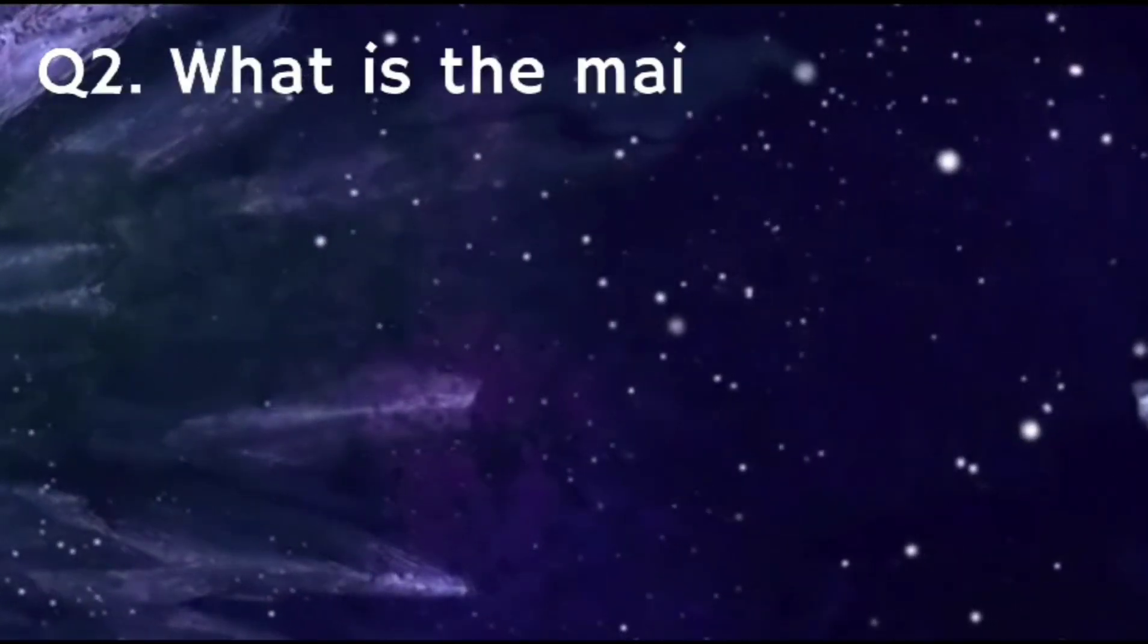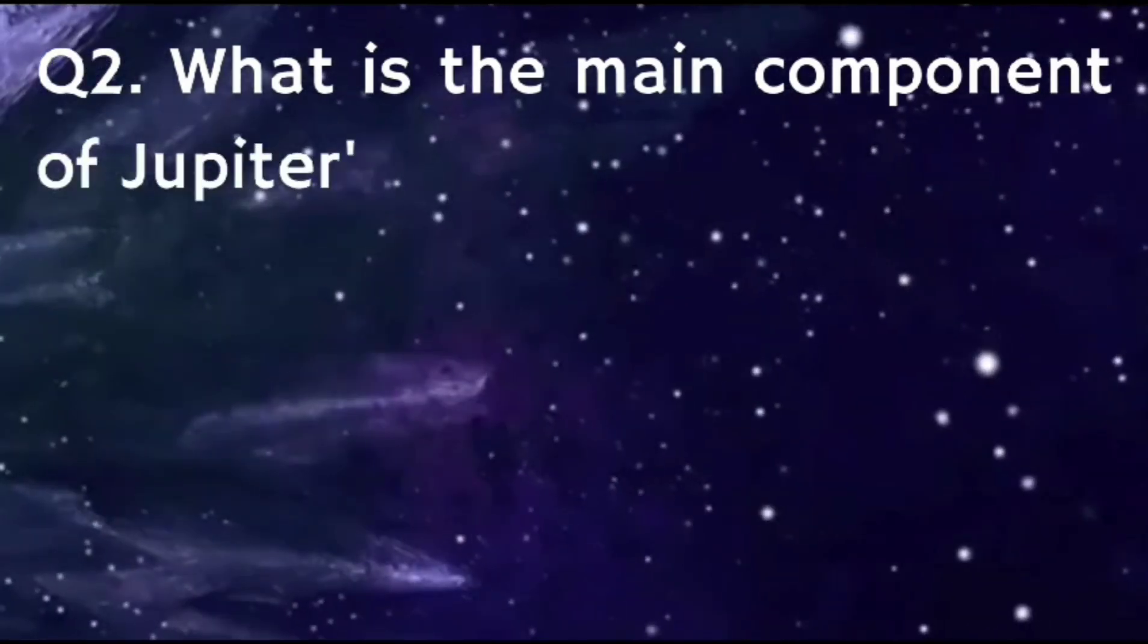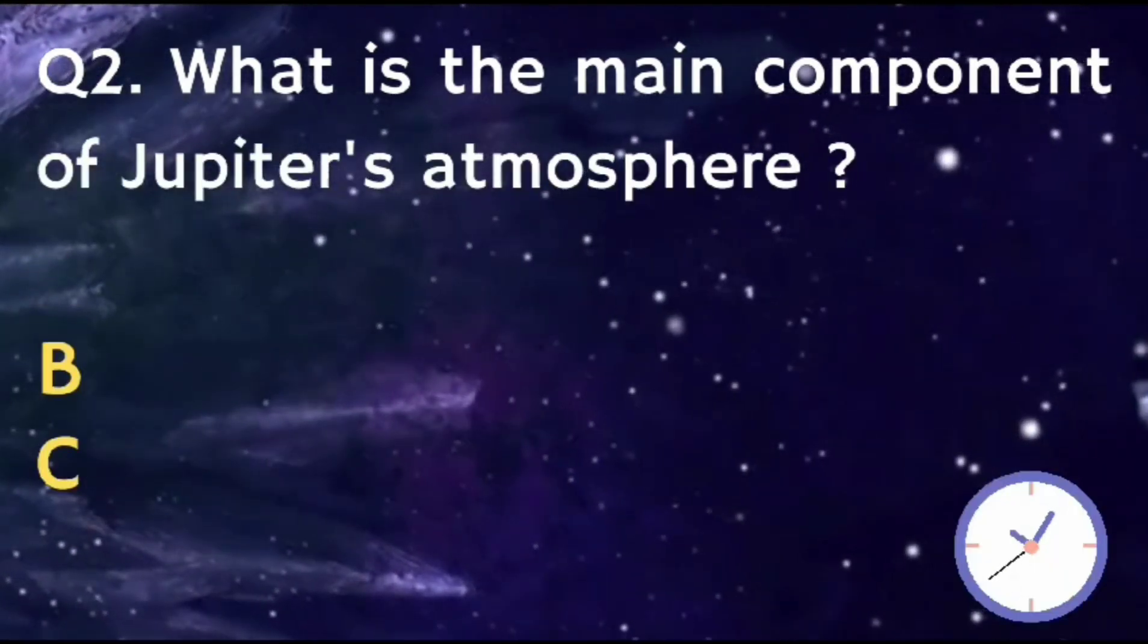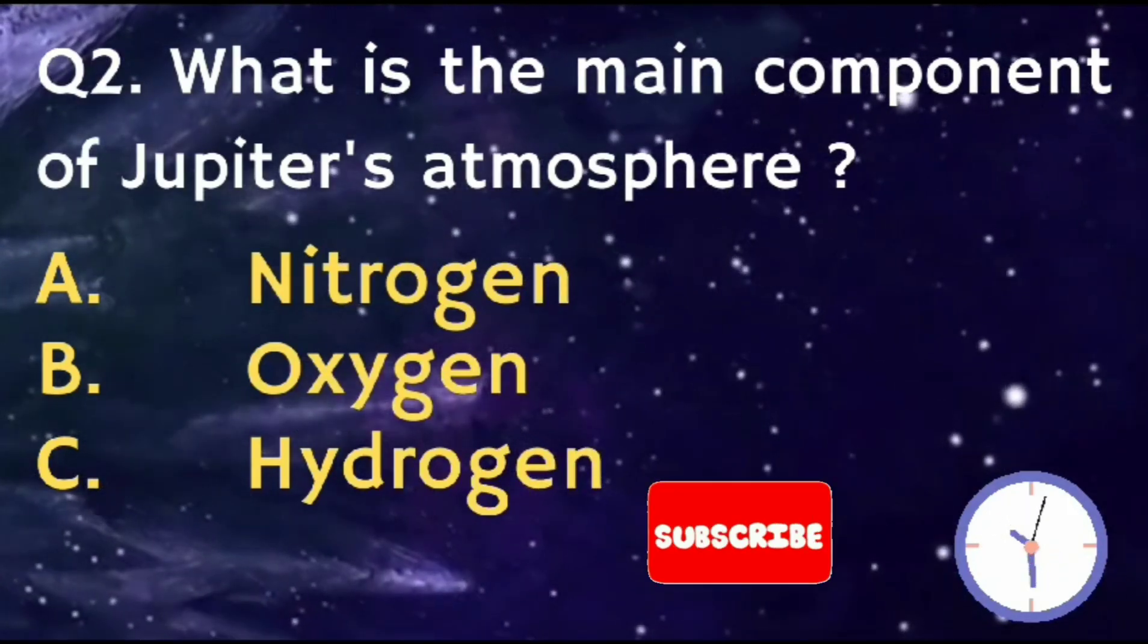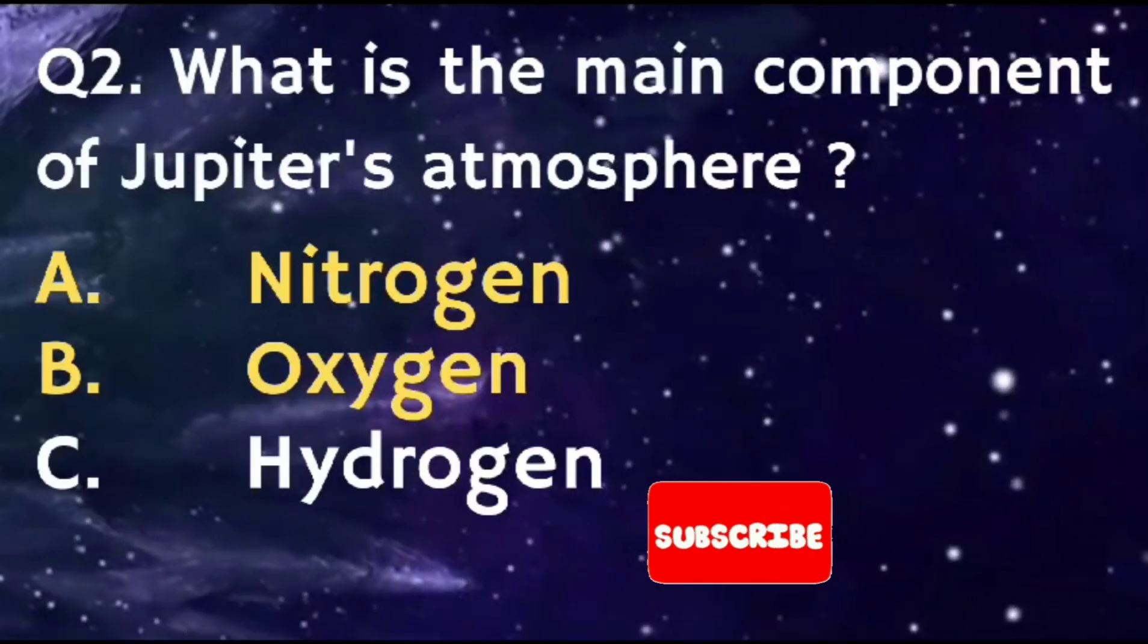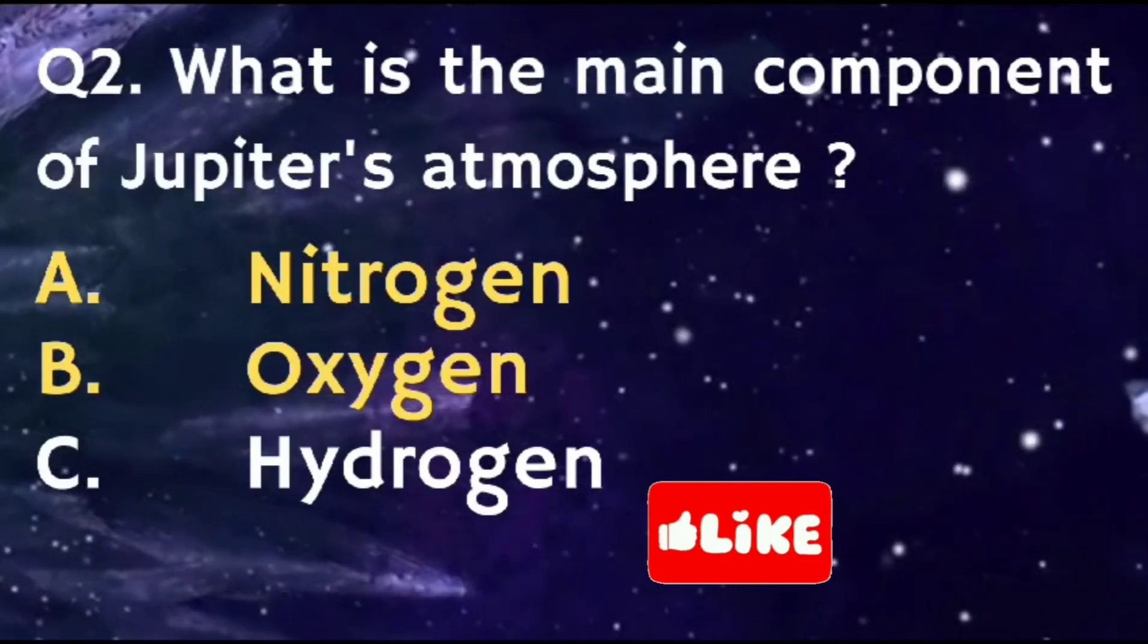What is the main component of Jupiter's atmosphere? The right answer is Option C, Hydrogen.